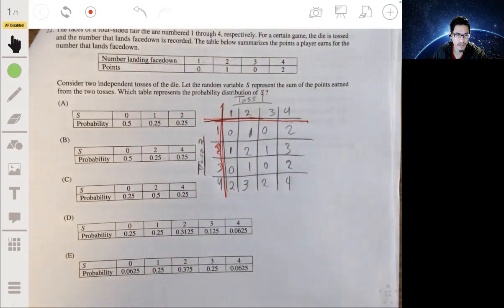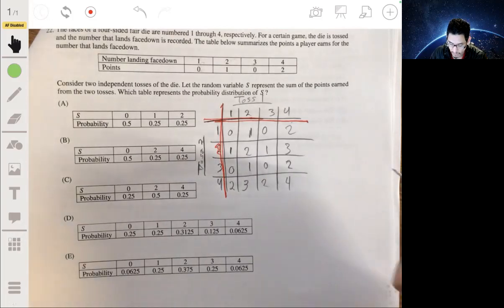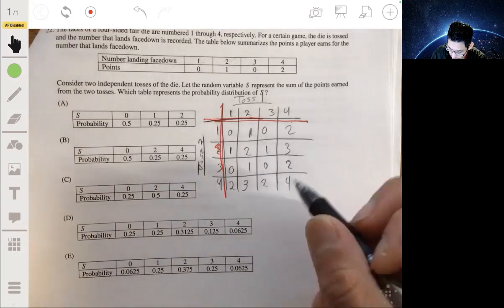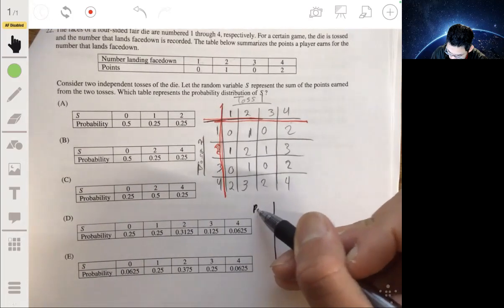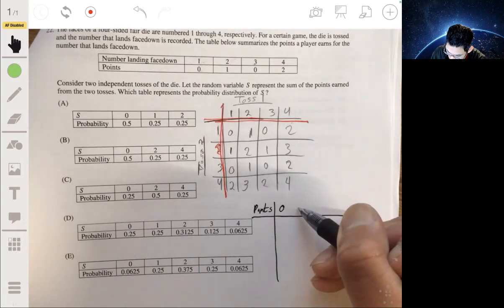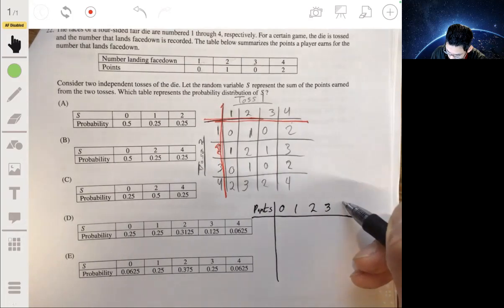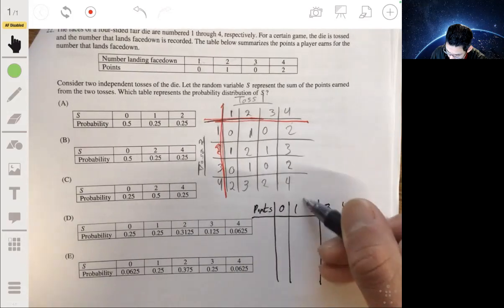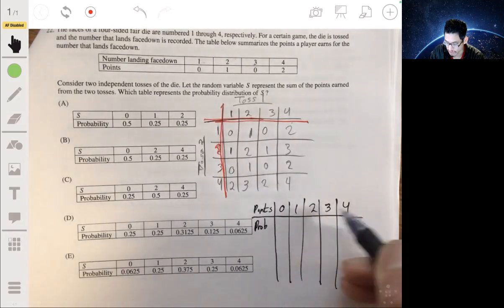So the points you can get are 0, 1, 2, 3 or 4. So let's make another table now with the points, you get a 0, 1, 2, 3 and a 4. And then we write what the probability of getting each of those could be.